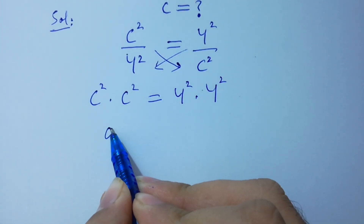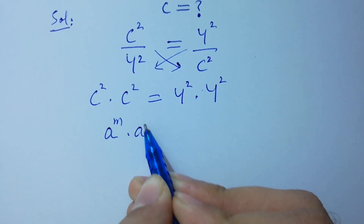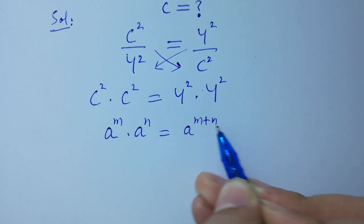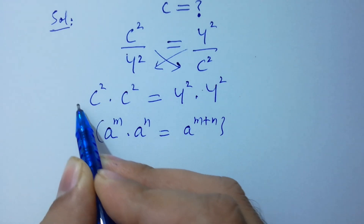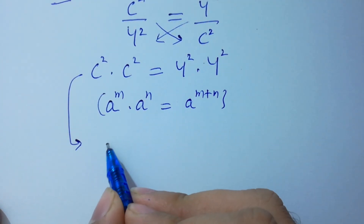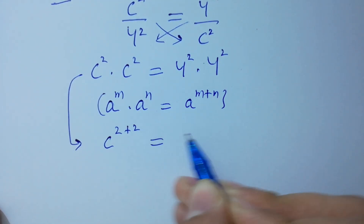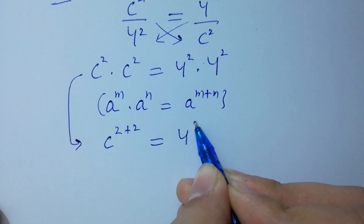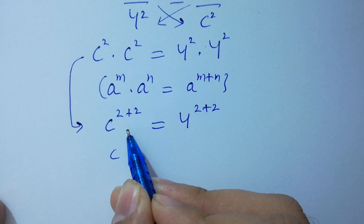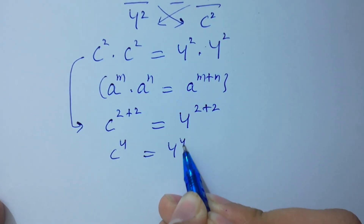Since a to the power m times a to the power n equals a to the power m plus n, it will be c to the power 2 plus 2 equal to 4 to the power 2 plus 2, which gives c to the power 4 equal to 4 to the power 4.